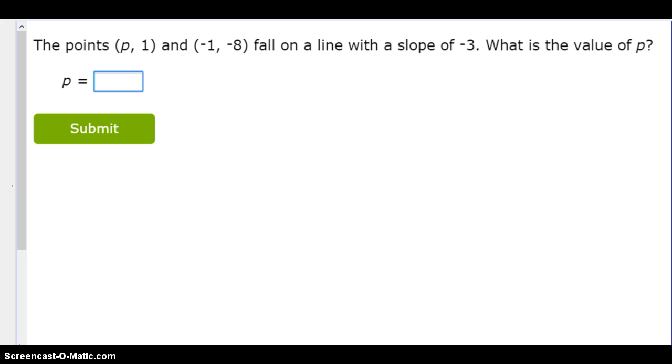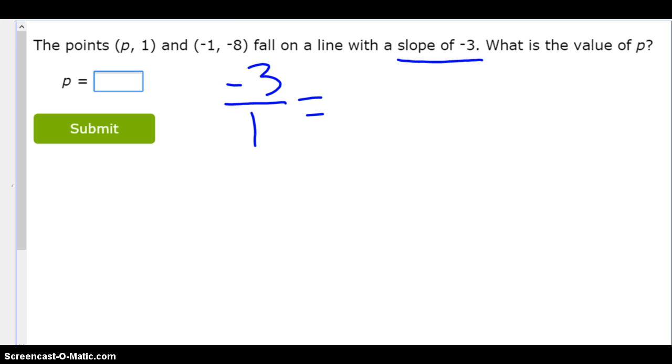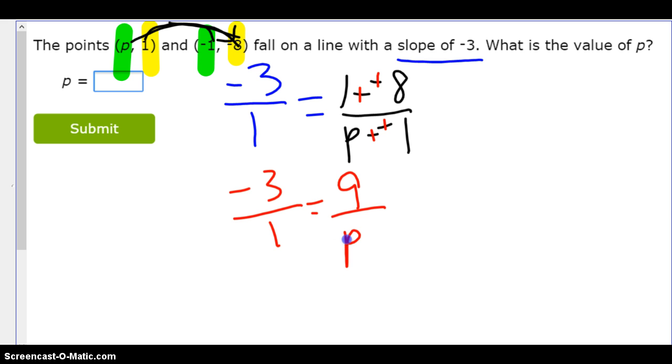But then what happens, so that's all fine and good, but then sometimes they give you a missing X value, which makes it slightly tougher, but not so bad. My slope is going to be negative 3, which is negative 3 over 1. This is where it becomes important to write it as a fraction. Then highlight. There are my Y's. Here are my X's. So, let's see. I'm going to go this way because I want the P first. So 1 minus negative 8. And then P minus negative 1.